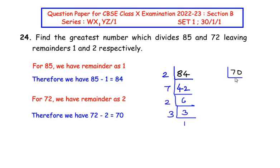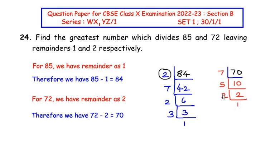Similarly, we divide 70 starting with 7: 7 × 10 = 70. Then 10 = 5 × 2, where both 5 and 2 are prime numbers. So the prime factorization of 70 is 7 × 5 × 2. Now we pick the common factors from 84 and 70. The common factors are 2 and 7, so the HCF is 7 × 2 = 14.